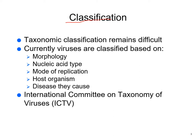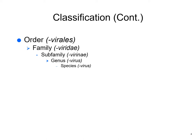Viruses are classified — and they're still working desperately on this, changing it all the time — based on morphology, what do they look like; the nucleic acid type, DNA or RNA; how they replicate; and the hosts they infect. They're named often by the hosts they infect and the disease they cause — for example, influenza virus causes influenza. They come in order, family, subfamily, genus, and species, and beyond species you have different serovars or types.